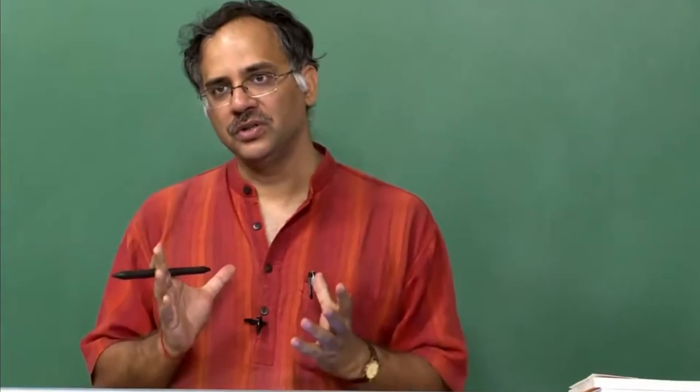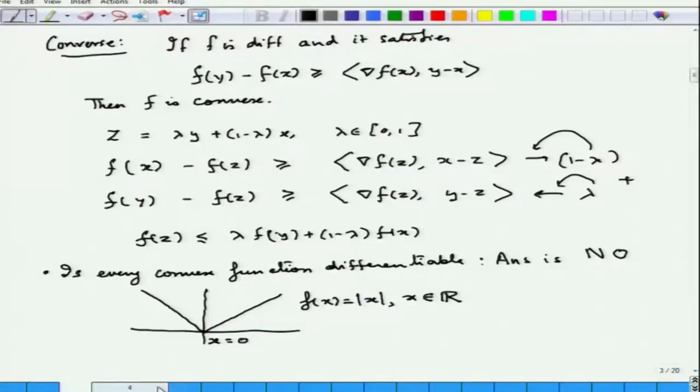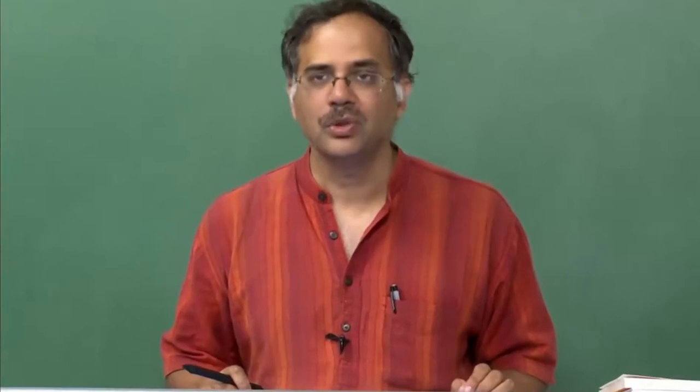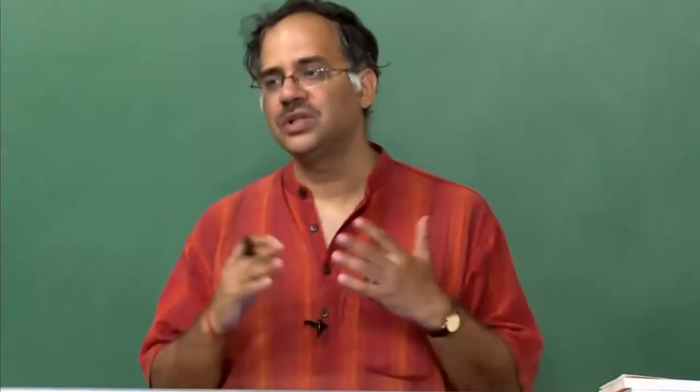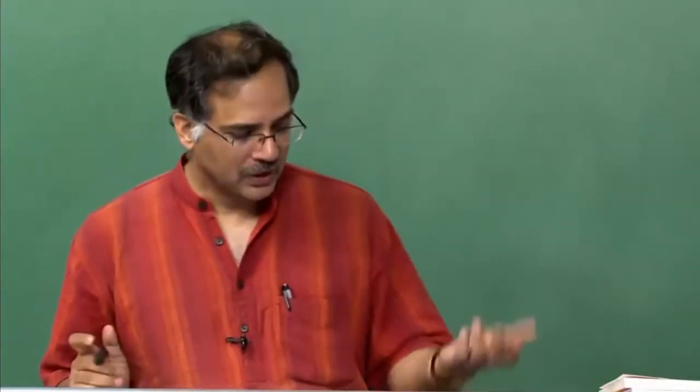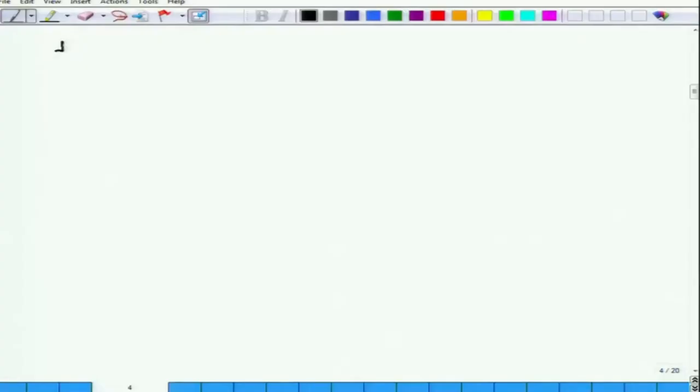This property of minima being attained at non-differentiable points is a generic property for convex functions. The question of what happens when differentiability fails will be answered slightly later. First, let us show that convex functions can be characterized through the monotonicity of gradients — a property that is currently a huge research topic.